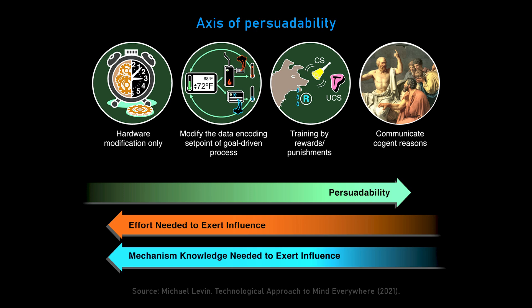In figure two you see a spectrum with four waypoints. As you move to the right, persuadability goes up — systems become more reprogrammable, more plastic, more able to do different things. The effort needed to exert influence goes down as autonomy goes up. When you're good at convincing or motivating the system, you don't have to sweat the details. This also relates to engineering agential materials: when you engineer wood or metal, you're responsible for everything, but with living matter you can give high-level prompts and let the system handle complicated things without micromanaging.